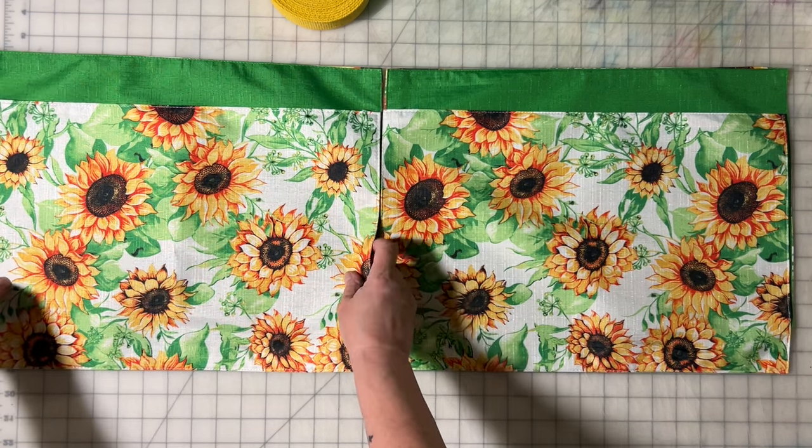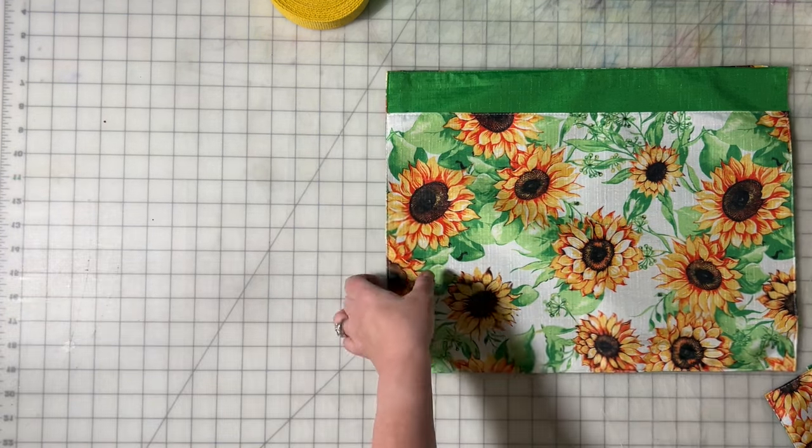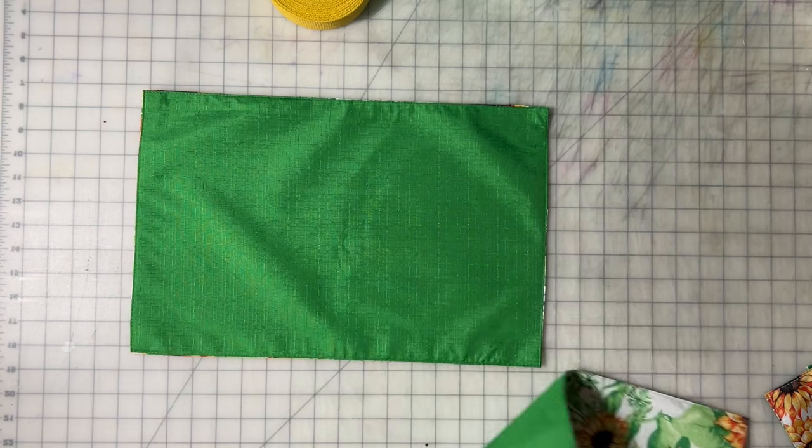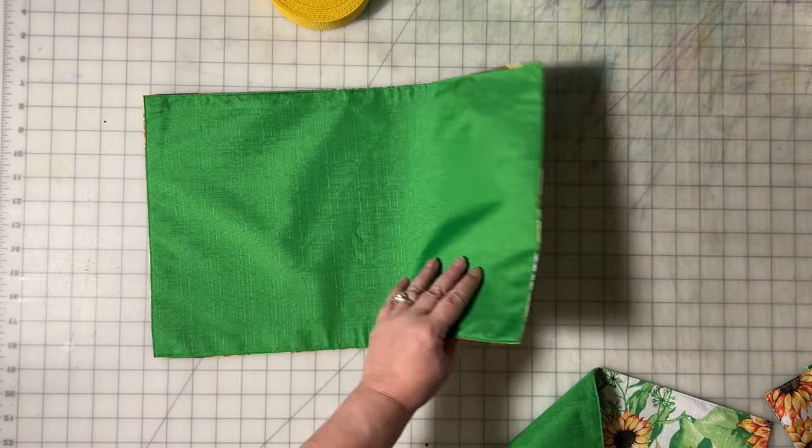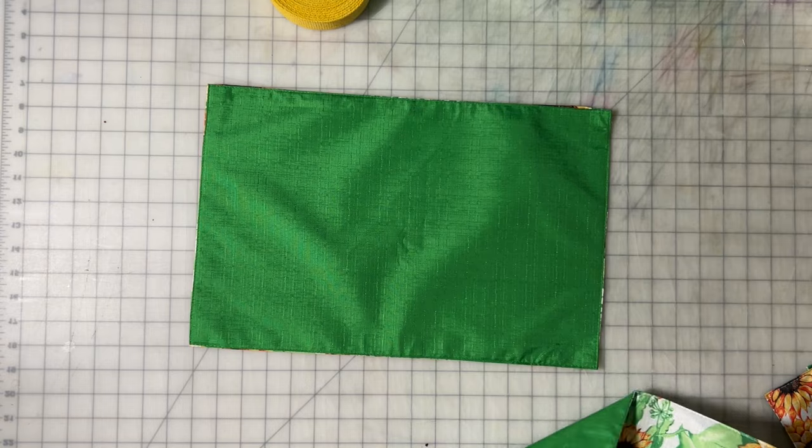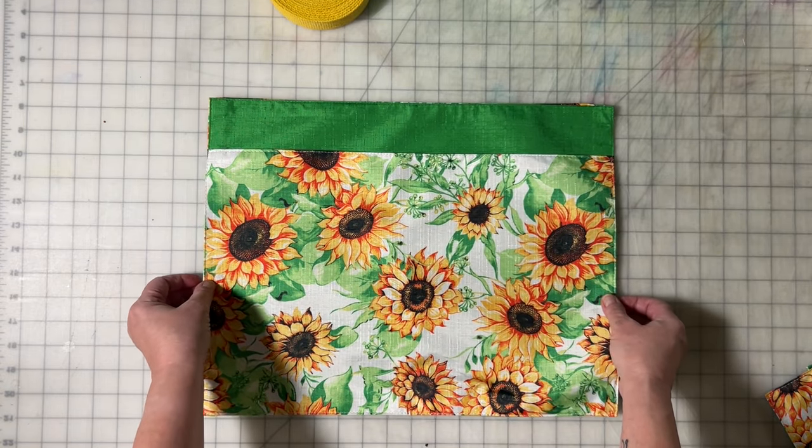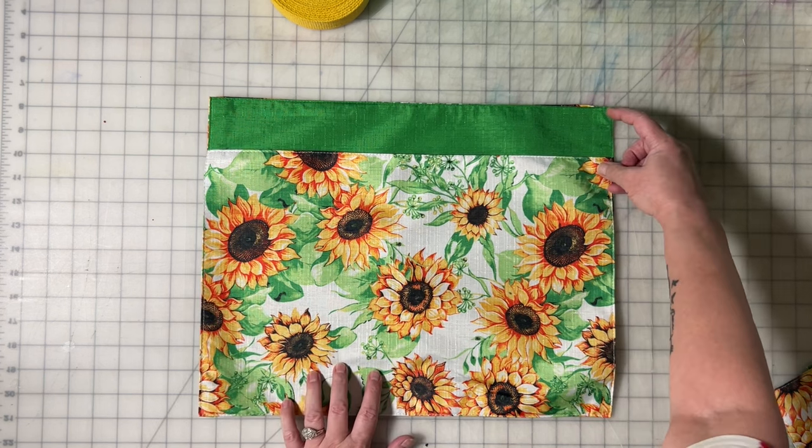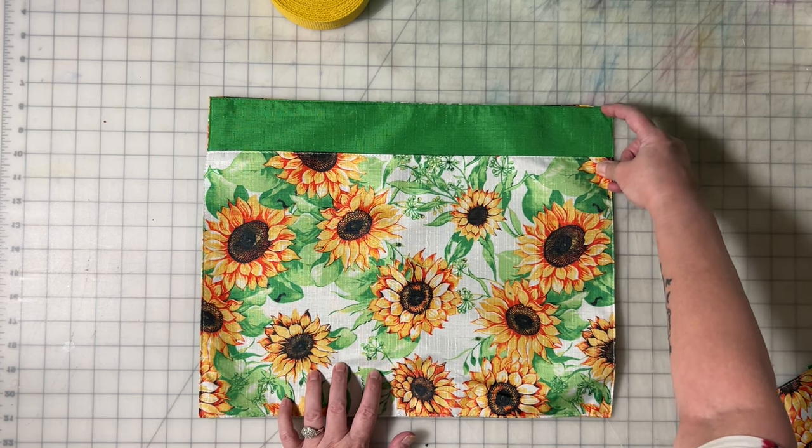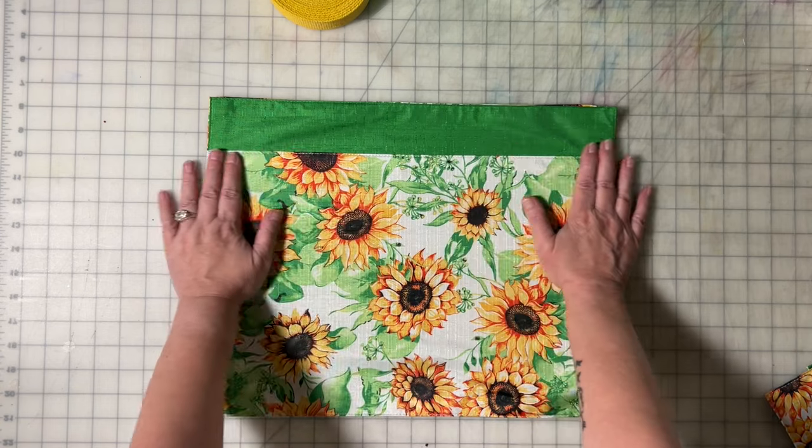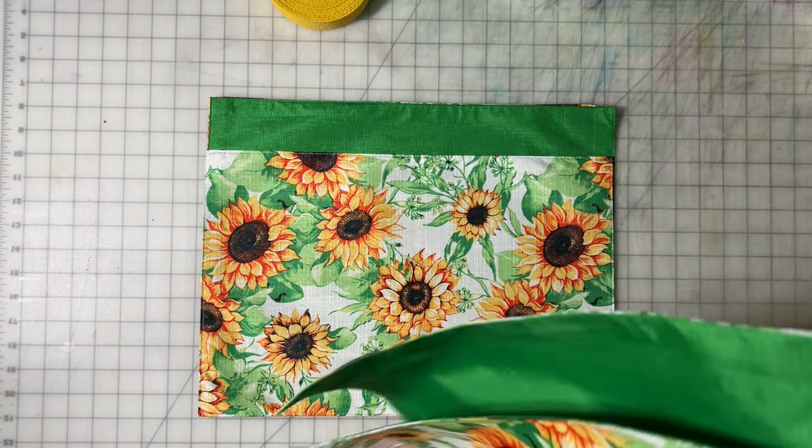For this bag you're going to need five of them. For the front and back of the bag, you're going to take one. They're double-sided, so there's sunflowers on one side and green on the other.